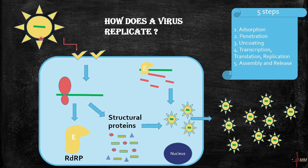The negative sense RNA has to be transcribed to a positive sense first. For this purpose, it carries an RNA-dependent RNA polymerase enzyme with it. Some are DNA viruses — the DNA directly enters the nucleus, is transcribed to mRNA, and the mRNA is translated to proteins, very similar to a human cell.